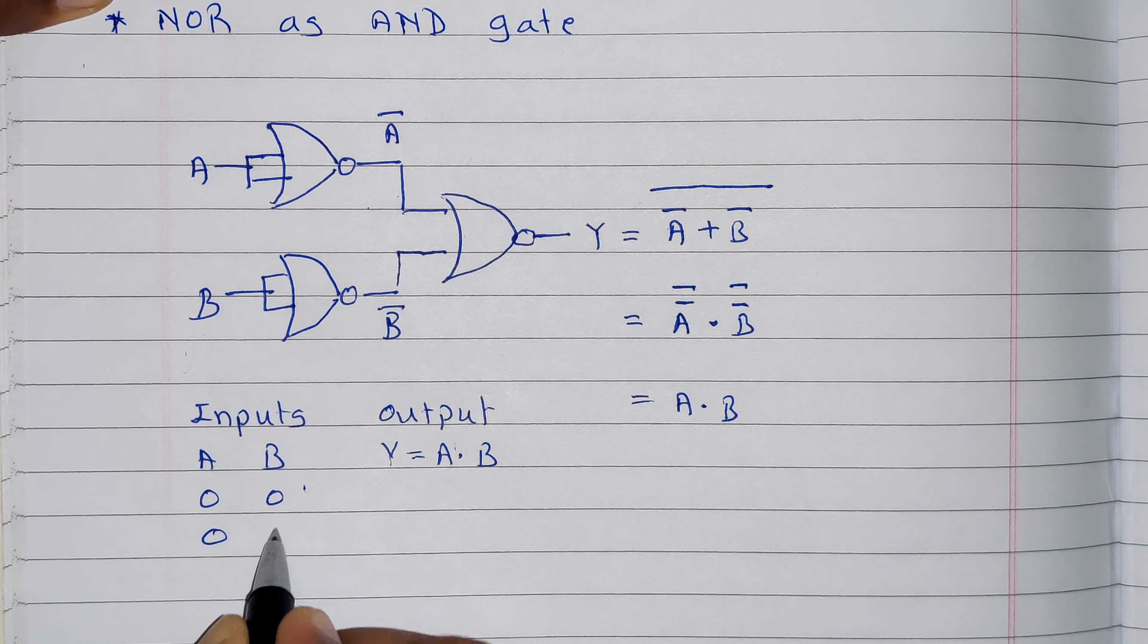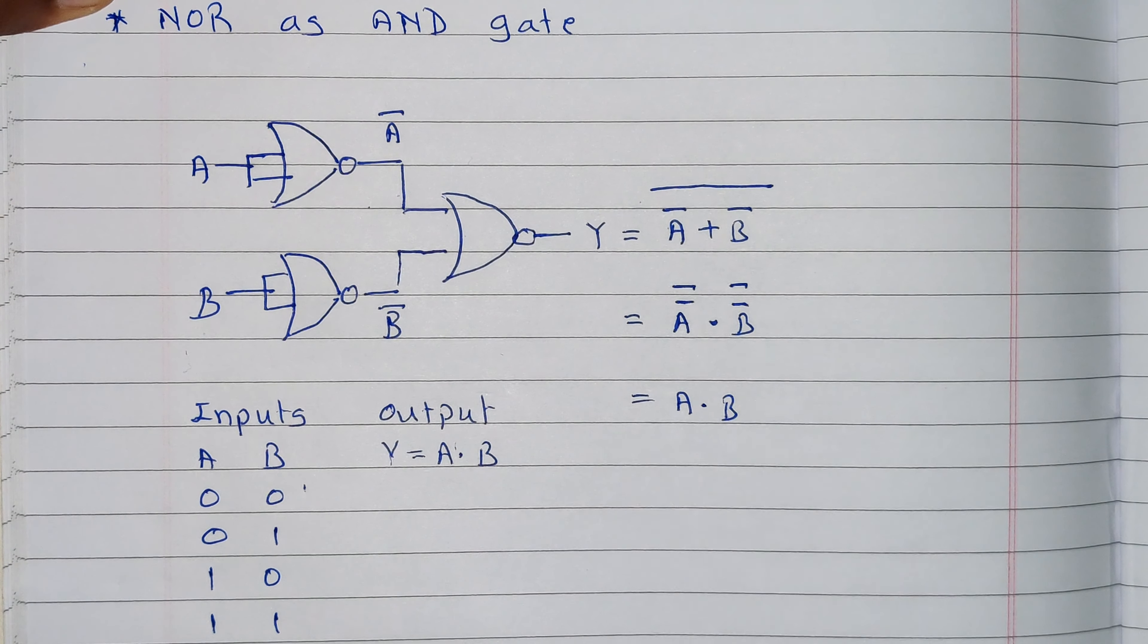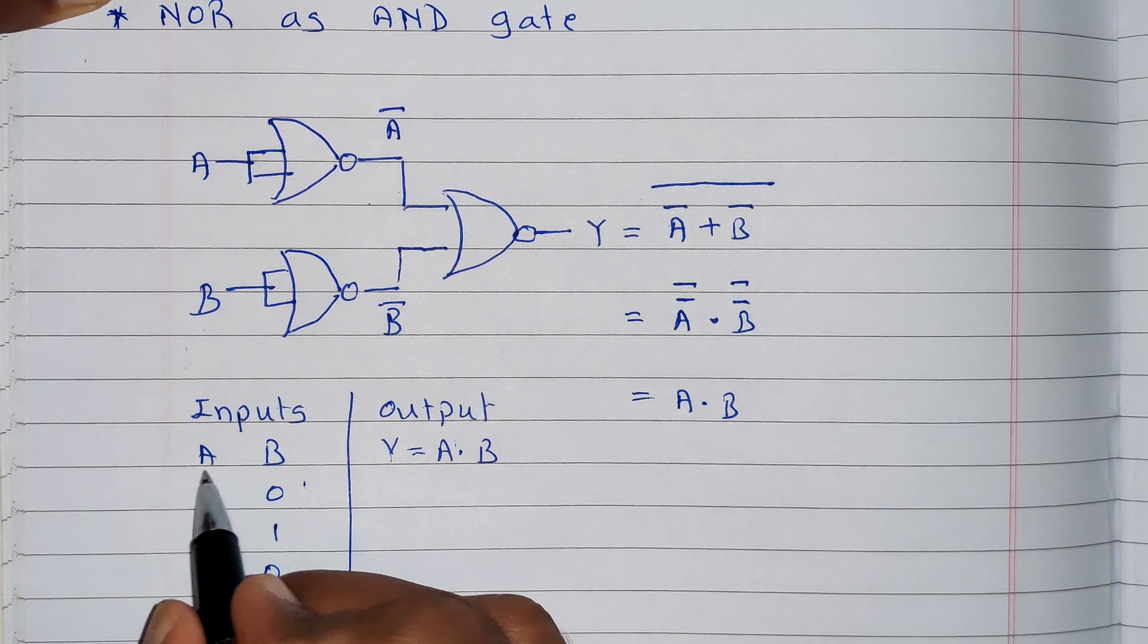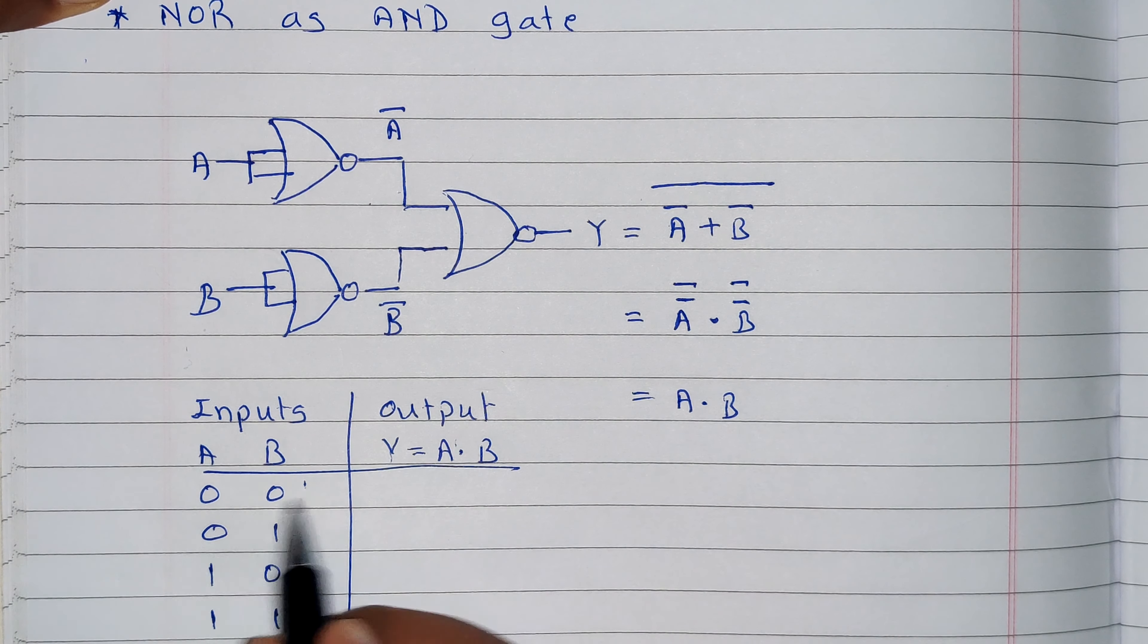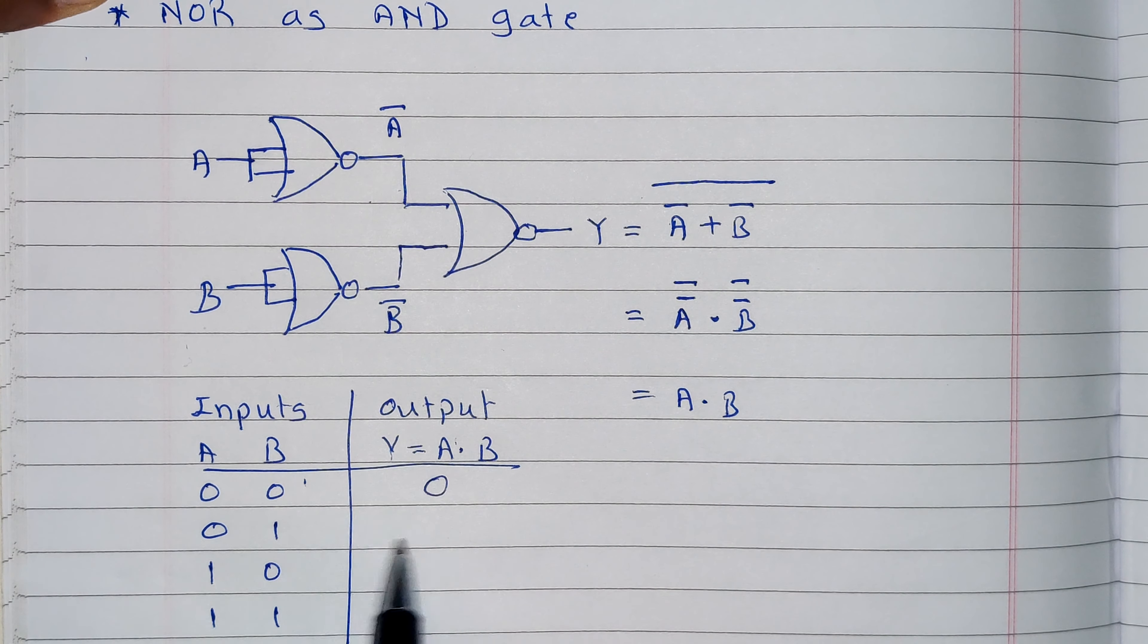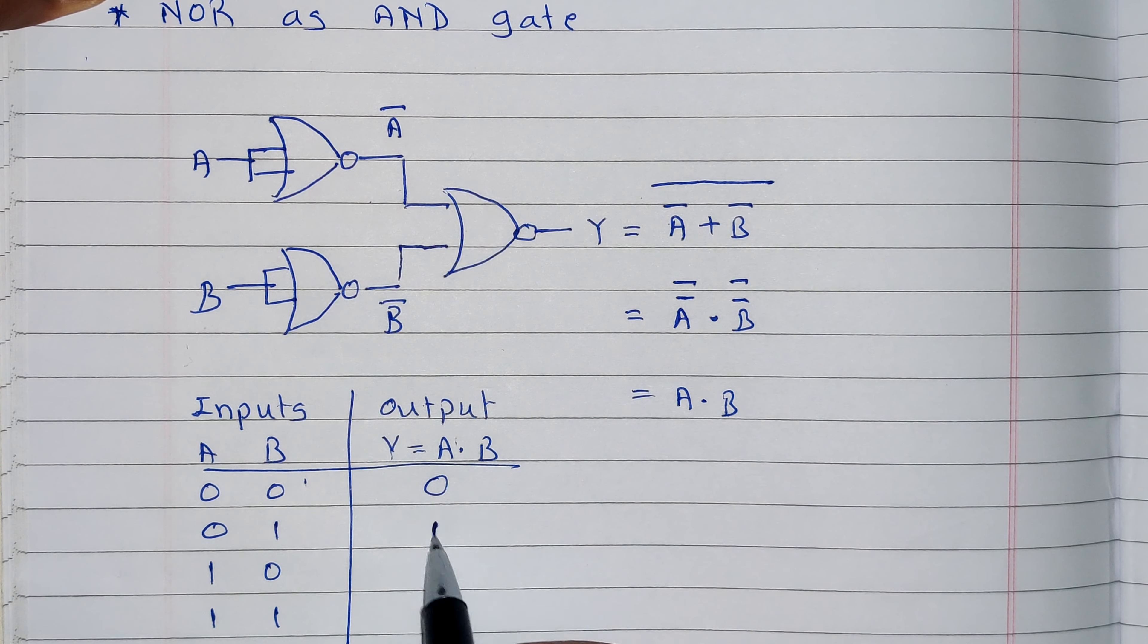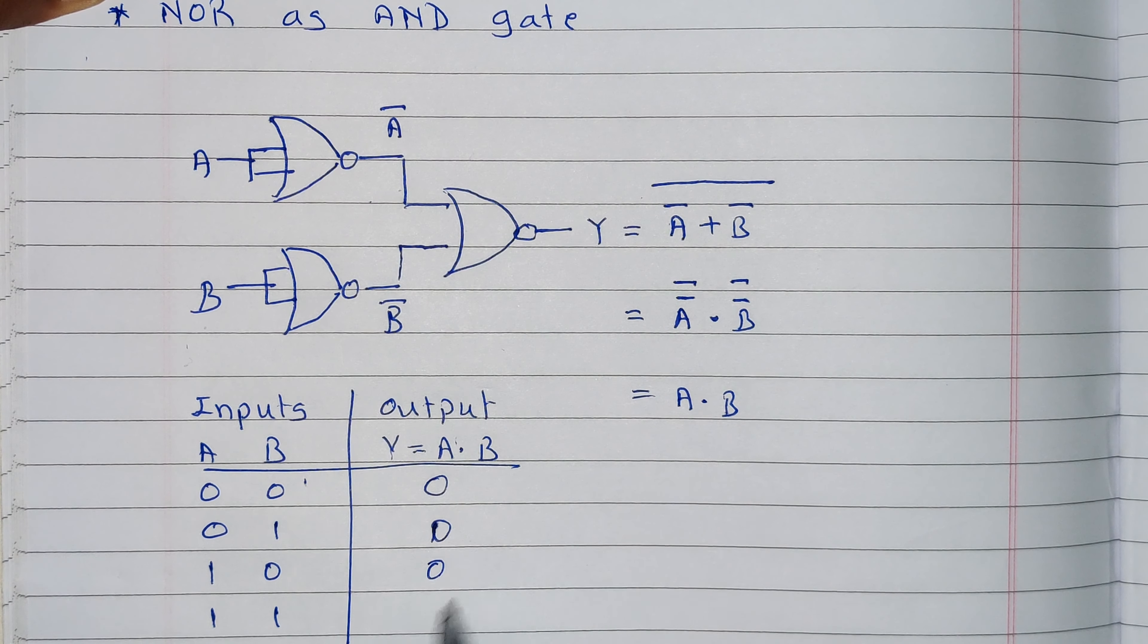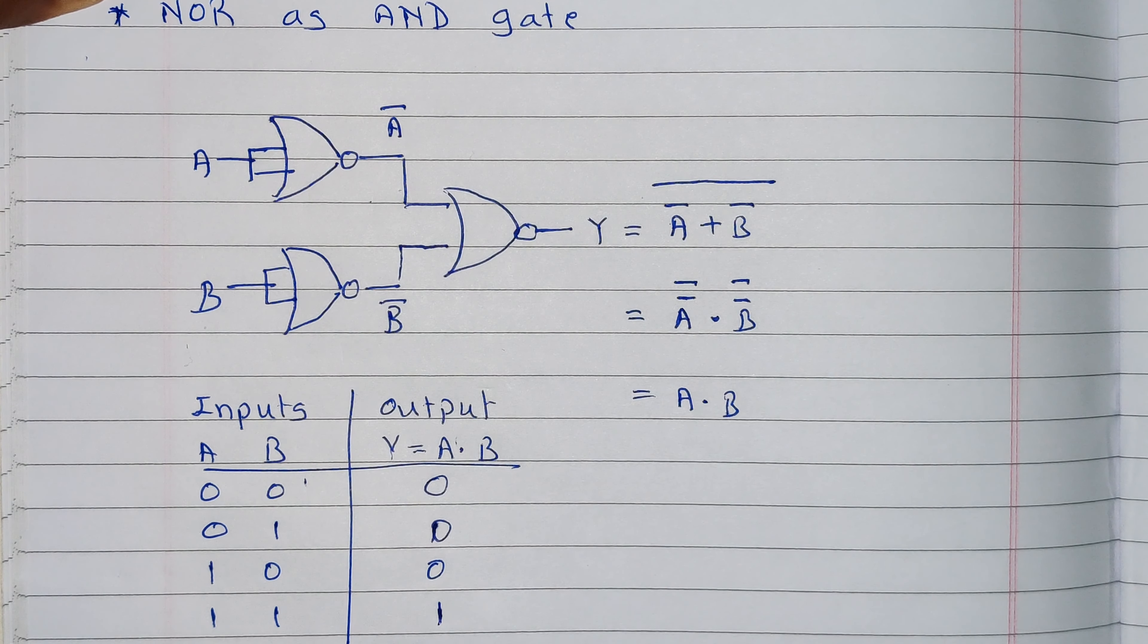Inputs are 0 0, 0 1, 1 0, and 1 1. Now let's perform multiplication A dot B: 0 into 0 is 0, 0 into 1 is 0, 1 into 0 is 0, 1 into 1 is equal to 1.